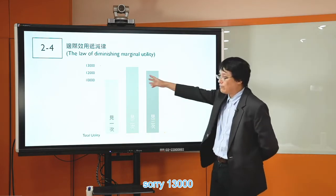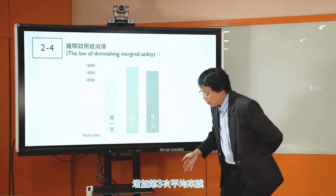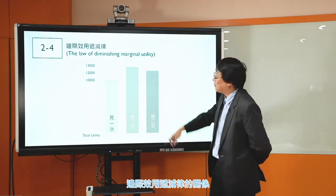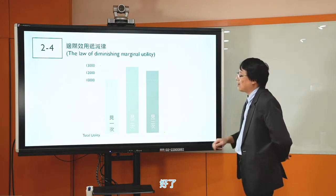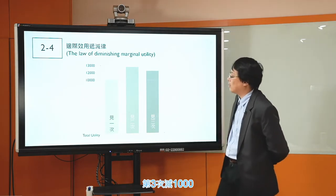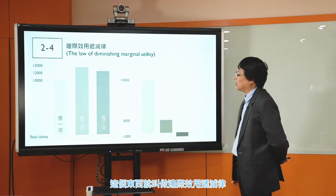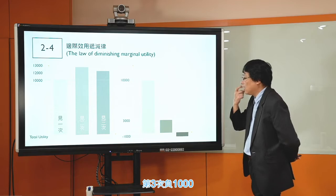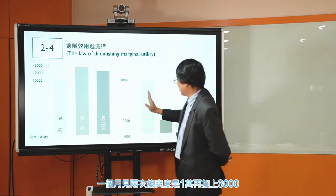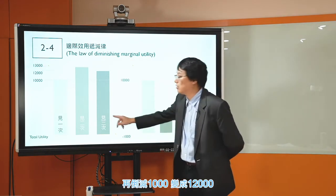因為邊際效用遞減率，我們可以看這個小朋友每個月去台北見女朋友：見一次非常爽，爽度1000；見第二次增加3000，所以每個月見兩次的話總的爽度是13000；見第三次因為吵架了，增加的爽度是-1000，所以總的效用變成是12000。所以第一次1000，第二次+3000，第三次-1000。